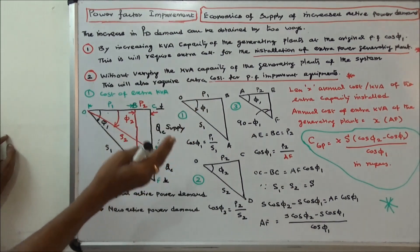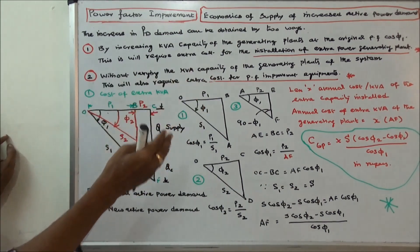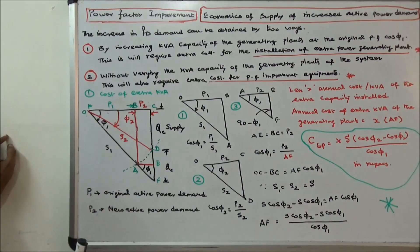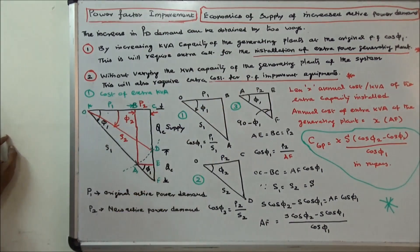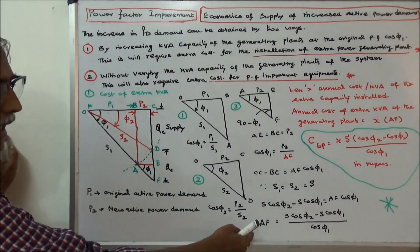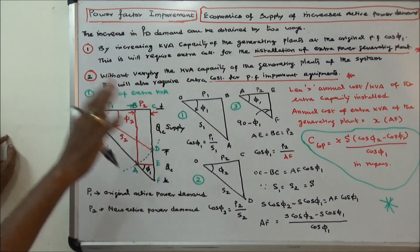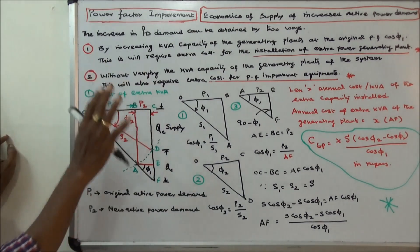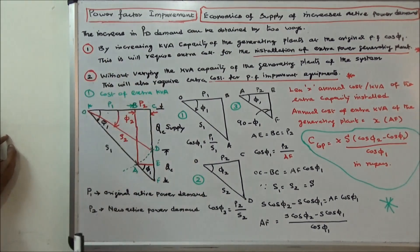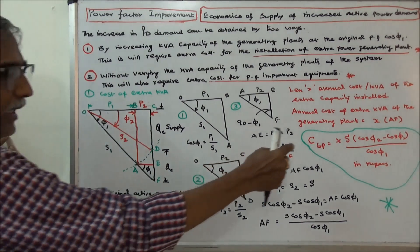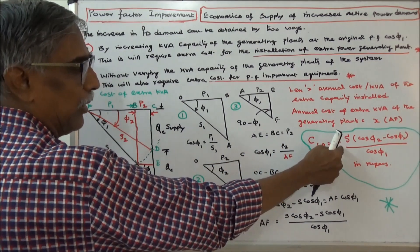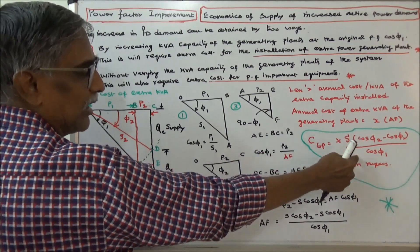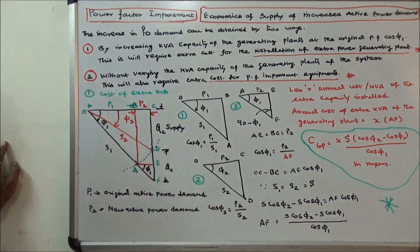Let X be the annual cost per kVA of the extra capacity installed. Therefore, the annual cost of the extra kVA of the generating plant equals X into AF. So the cost of the extra kVA is equal to X into S into (cos phi 2 minus cos phi 1) divided by cos phi 1, in rupees. That is the first case.